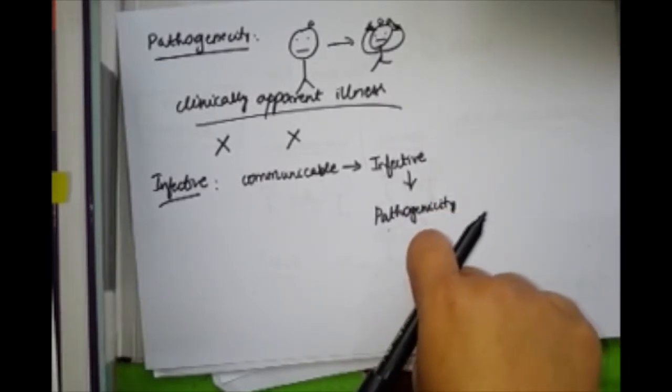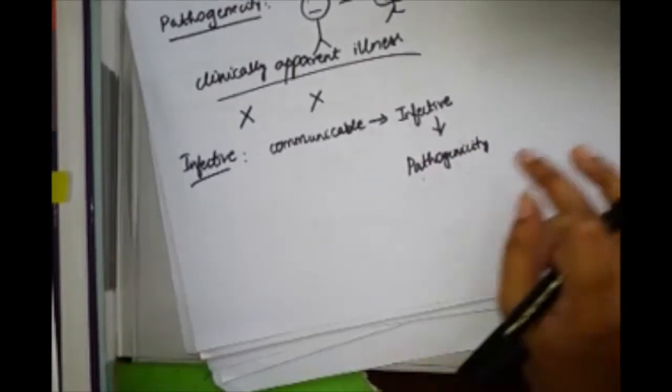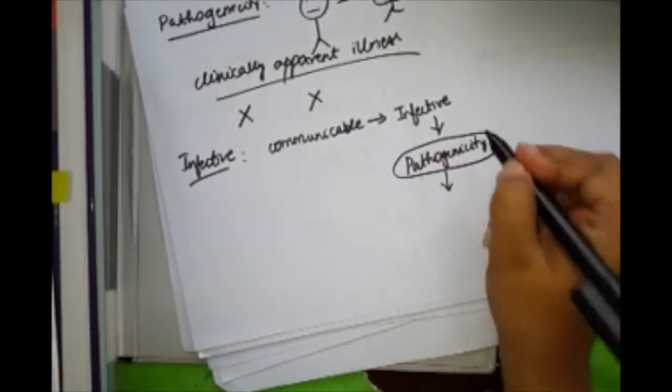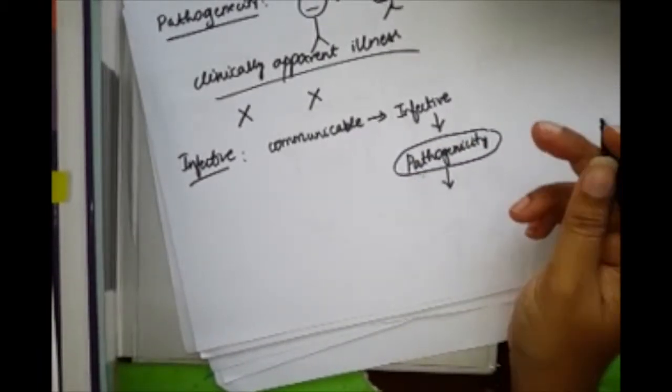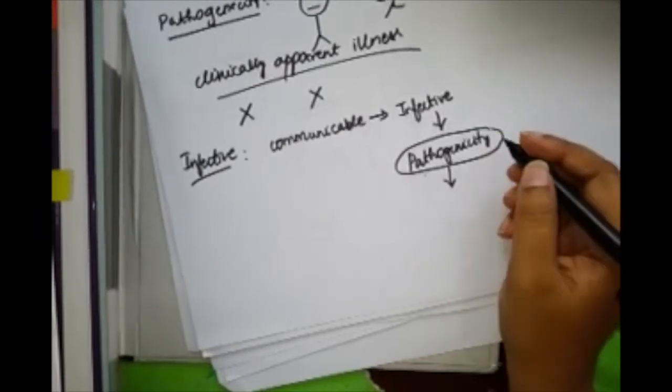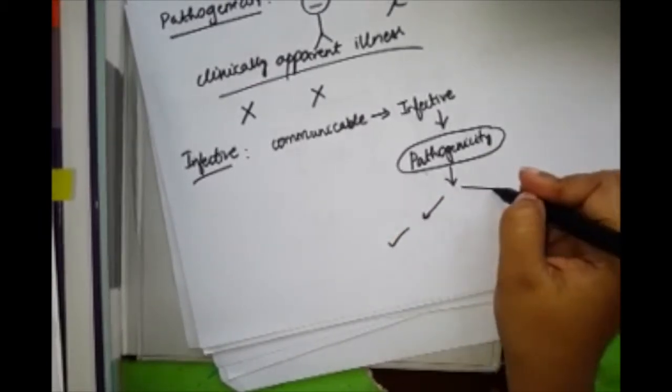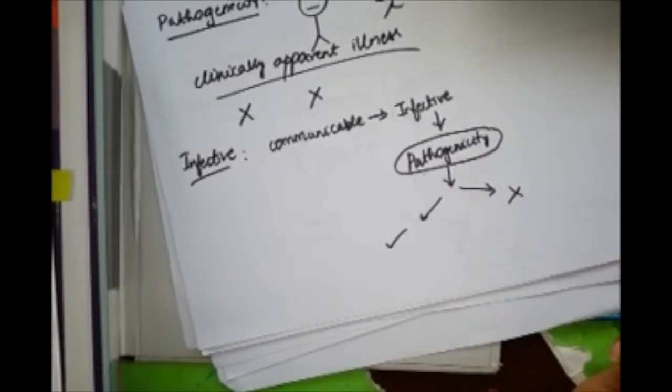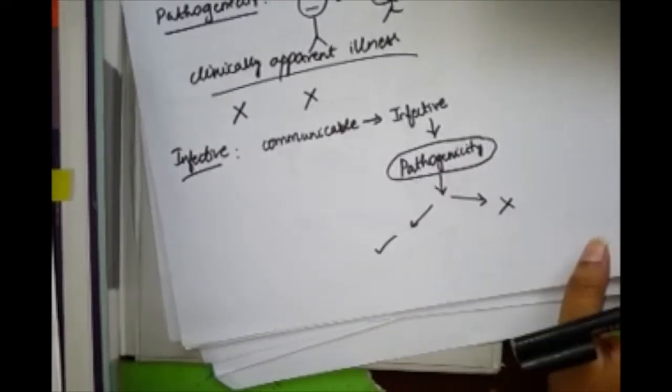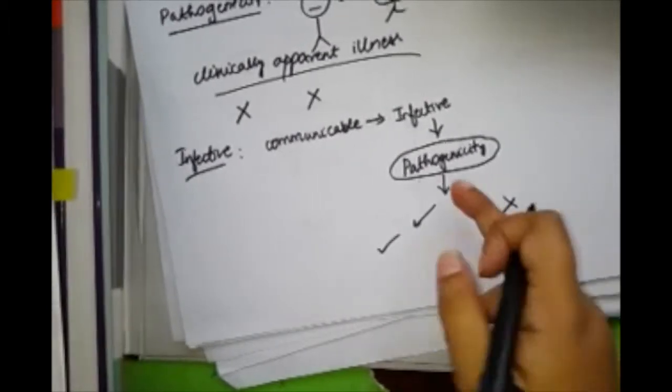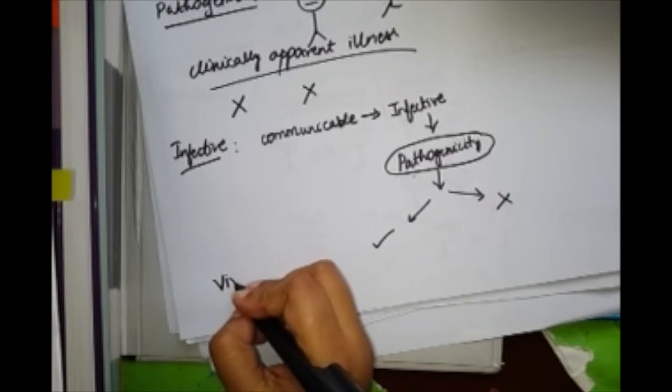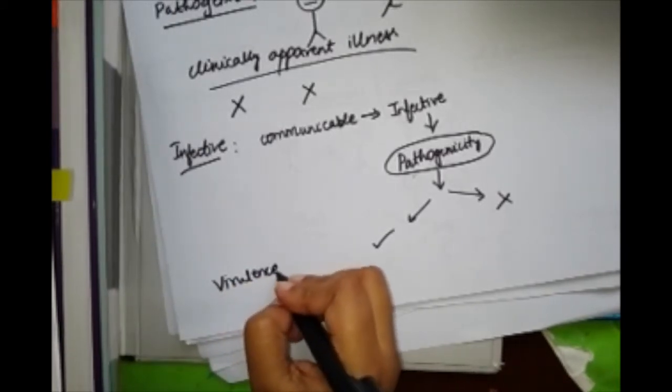After pathogenicity, now this person has the disease. He has the lice infestation. What will happen to this guy? One, he'll get cured. Two, he doesn't get cured. Same concept as your pathology—reversible, irreversible injury. That is your virulence. Virulence is ability to produce severe illness.